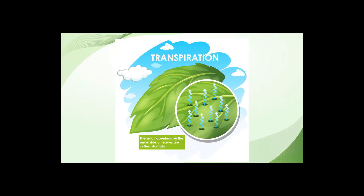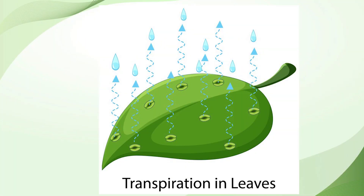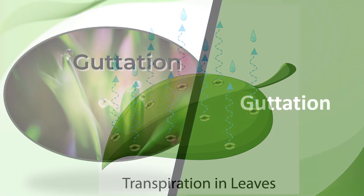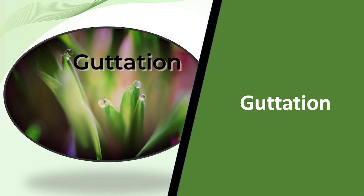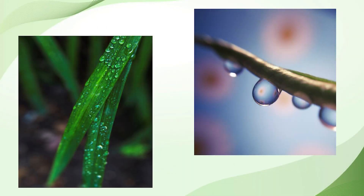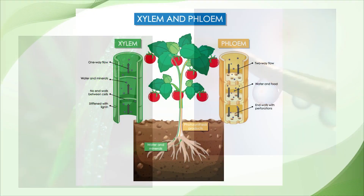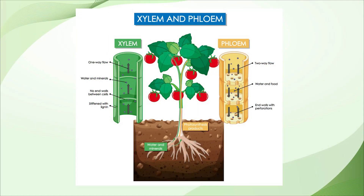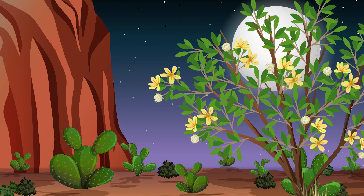Transpiration takes place during daytime. It is the evaporation of water from plant leaves. Guttation is another plant process very similar to transpiration but related to root pressure. Guttation is a process through which excess water oozes out in a liquid state — in the form of droplets — into the atmosphere through the vascular bundle xylem, and takes place only during nighttime.